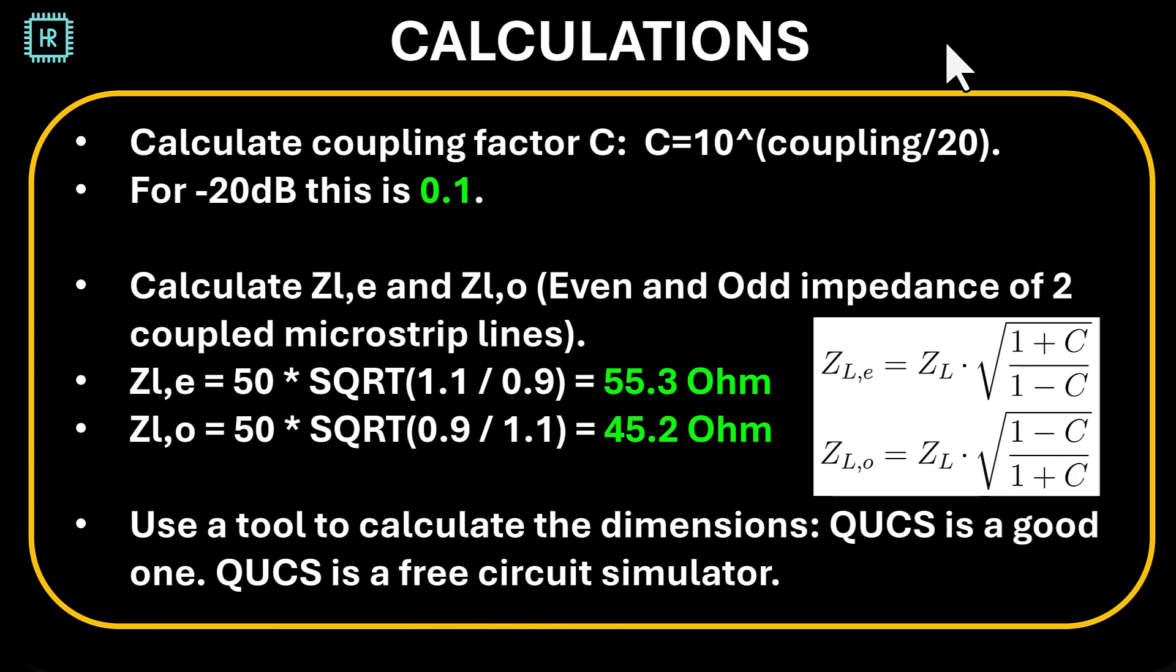Calculations turn out to be relatively simple. So the first thing you need to do is calculate the coupling factor C. Assume you want a coupling of minus 20 dB like in our case. You just fill in 10 to the power of minus 20 divided by 20. That means 0.1. So C is 0.1. Now what you have to calculate is the even and odd impedances of these coupled microstrip lines. I'm not going into the theory there. I'm just going to show you the formulas which are really quite simple. ZL is 50 ohms. You have one plus 0.1 and one minus 0.1 and that gives you ZLE. And in the same way you can calculate ZLO. Just the plus and the minus signs have swapped. That'll give you 55.3 and 45.2 ohms.